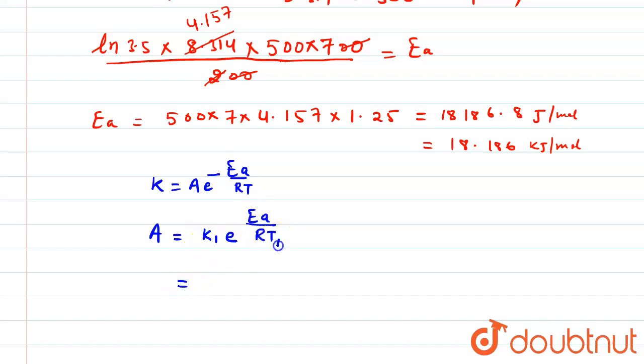So k1 is 0.02, and e to the power Ea, value of Ea is 18,186.8, and that is divided by R, value of R is 8.314, and temperature is 500. Now the task is to find this value.